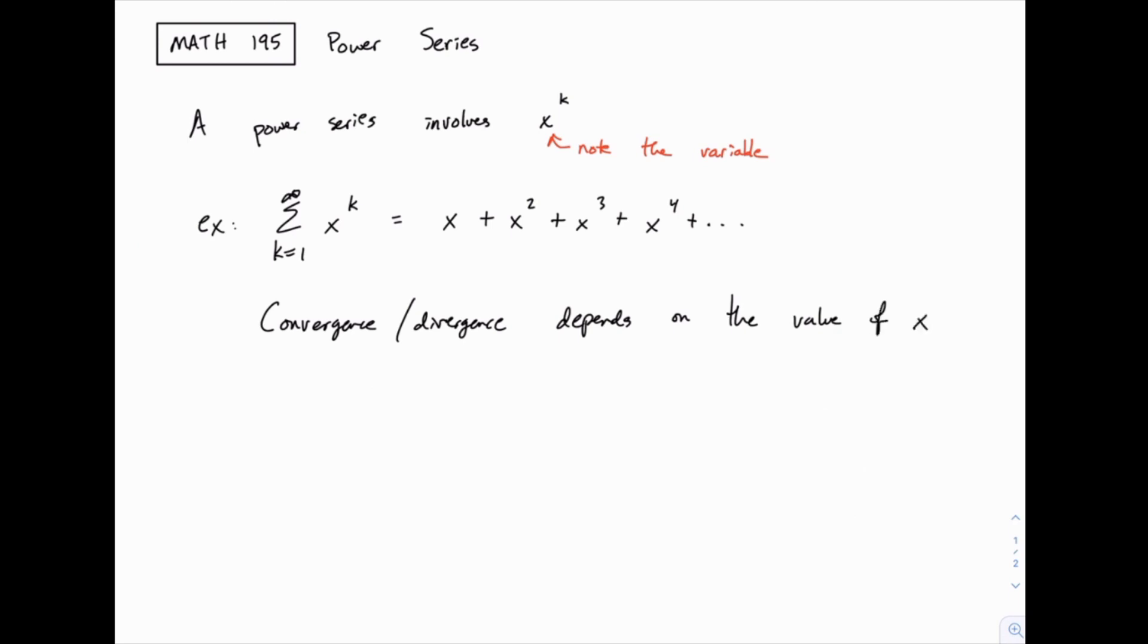So some values of x will make this series converge, some values of x will make it diverge. And the main goal with the power series is to answer the question, what values of x make this converge? When we use a power series, when you encounter one, the question will be, what values of x make this converge?